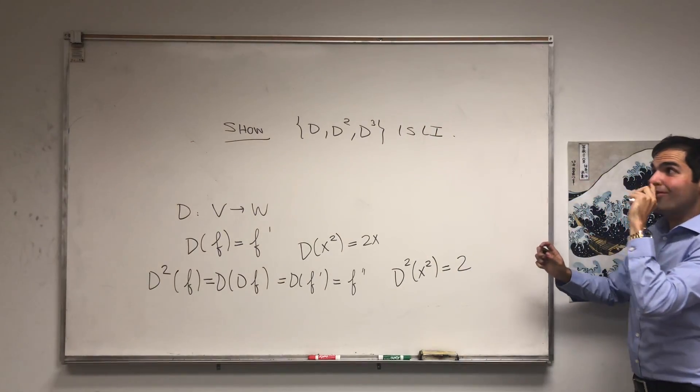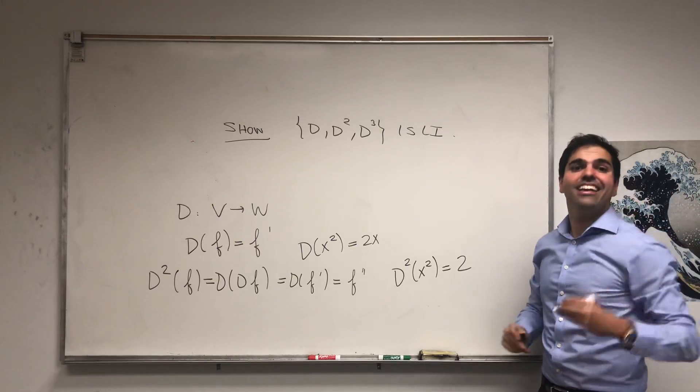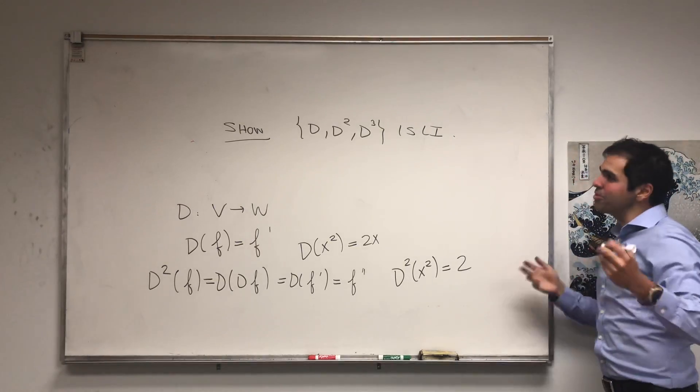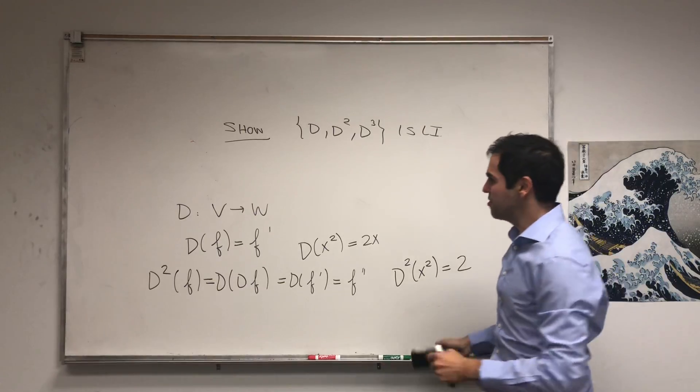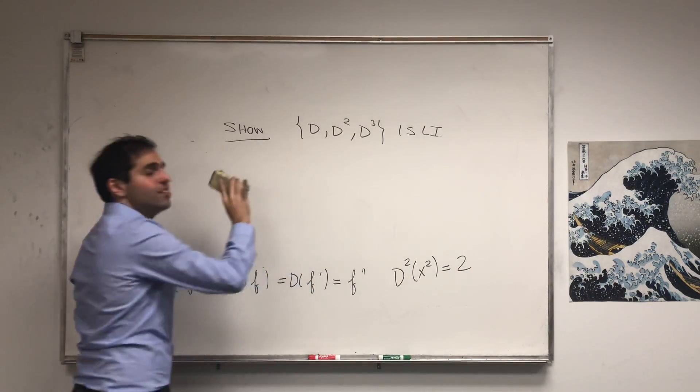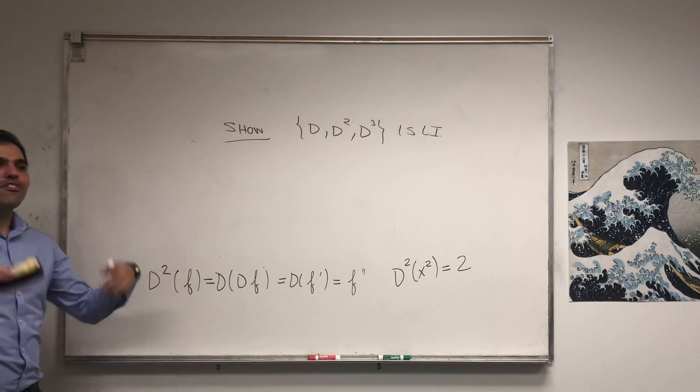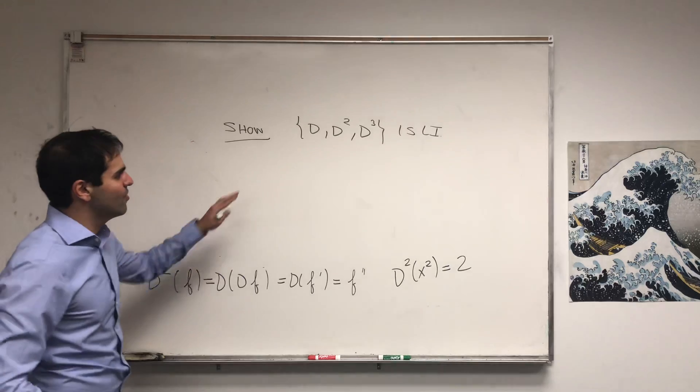And by the way, this works for any power, so you can go up to D to the N or something. What's more interesting is what happens in the infinite case - probably also true, but not 100% sure. No, actually it is true because remember for linear independence you take finite linear combos, so that also works.